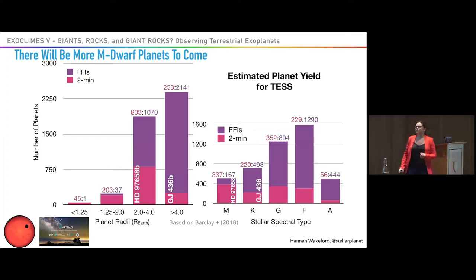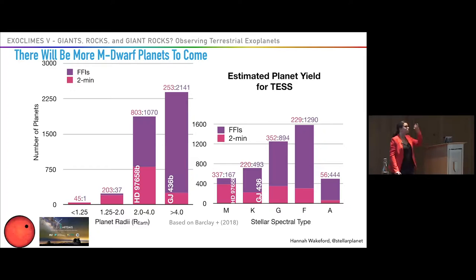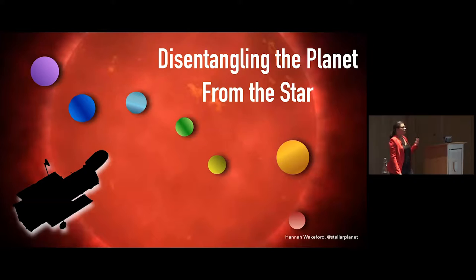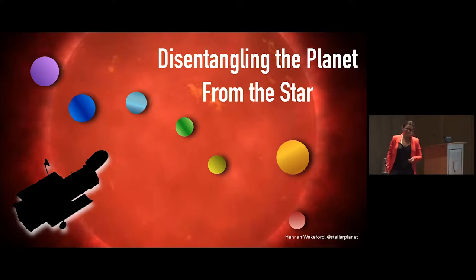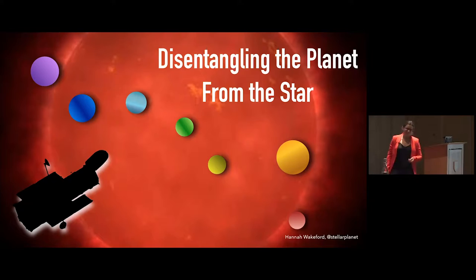In the future we're getting many more planets — TESS and SPECULOOS will deliver lots of M-star planets. We really need to understand this type of system. I'm going to take you through work I've recently done on the TRAPPIST-1 system, trying to learn how we can disentangle the planetary atmosphere from that of a cool, annoying little M-star.